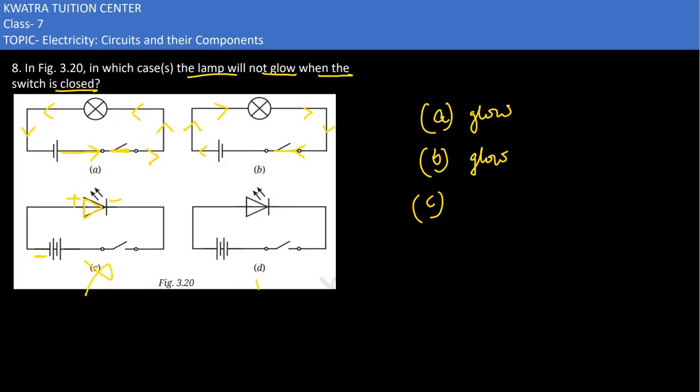Whereas in part D, it would work and glow. Why? Because in this case they had reversed the polarity - positive is now connected with the positive side of the LED.